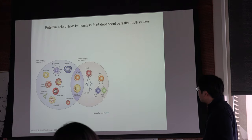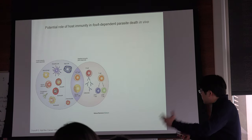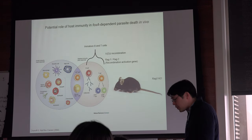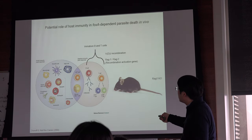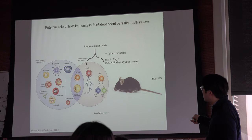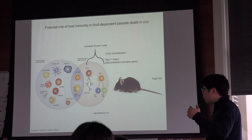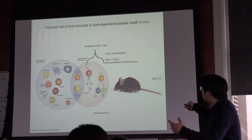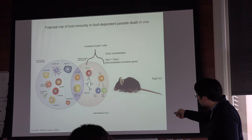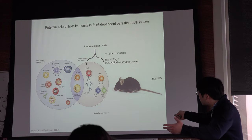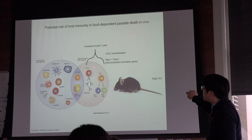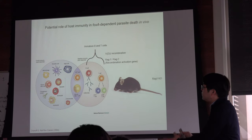To test this further, we can do the same experiment in immunodeficient mice. There's a specific knockout mouse that lacks the RAG1 gene — the recombination activation gene — which is required for immature B cells and T cells to undergo recombination and produce mature B cells and T cells. Absence of this gene means the mouse lacks the components of adaptive immunity.